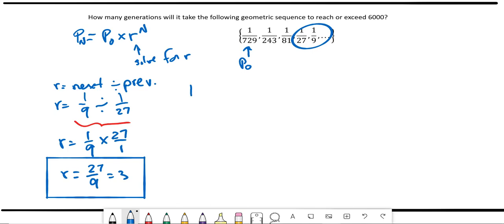So now we can write our explicit function. And the question is asking, how many generations will it take so that we reach or exceed 6,000? So we're going to replace pn with 6,000.